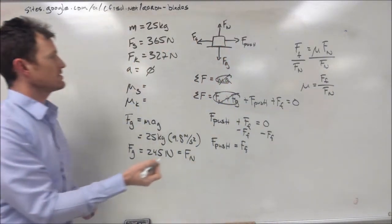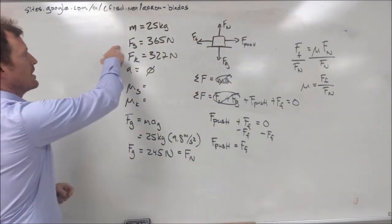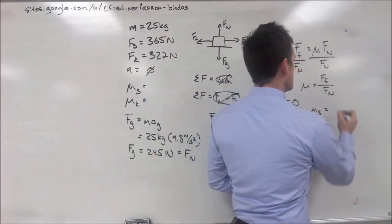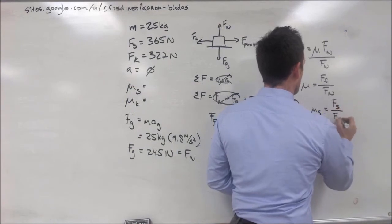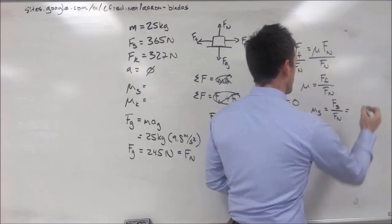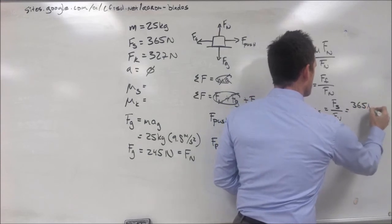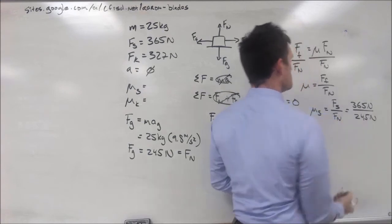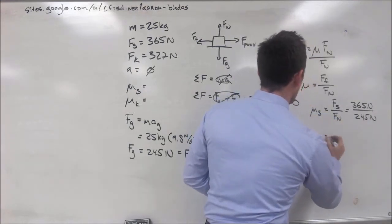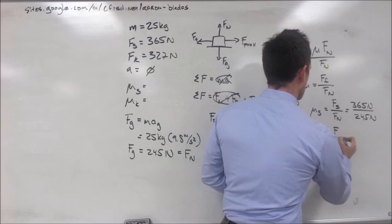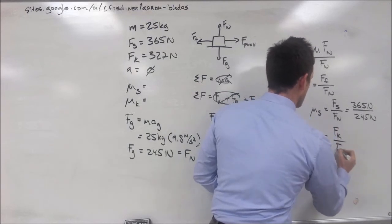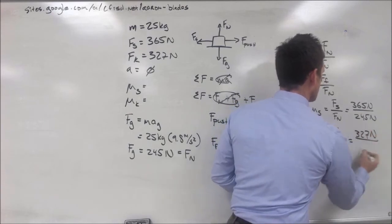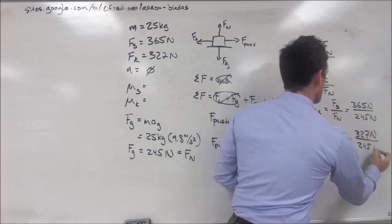Now, if we plug in our answers, plug in our initial conditions right here, we have f of s, our static mu is equal to our f of s over our normal force. Or, 365 newtons over 245 newtons. Similarly, our mu k is equal to f sub k divided by normal force, or 327 newtons divided by 245 newtons.